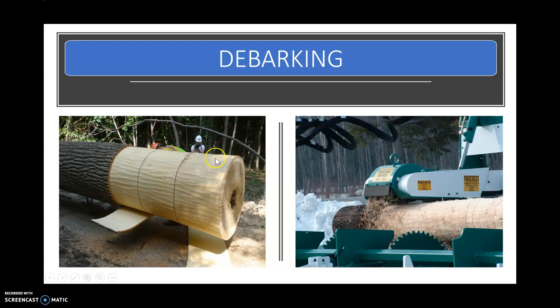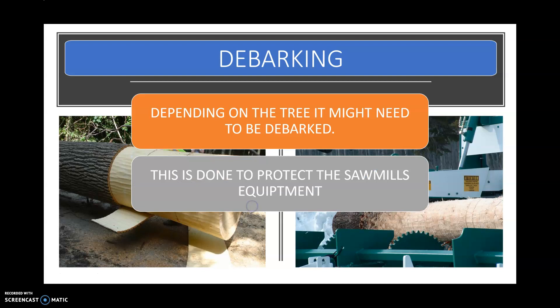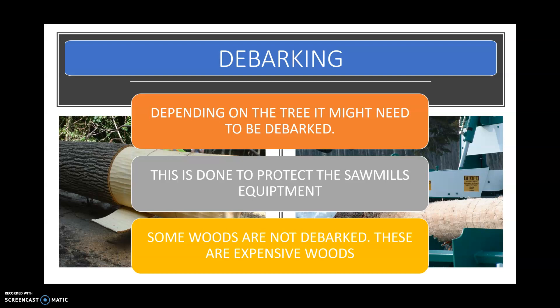Debarking. As you can see, we have a tree here that the bark has been taken off. There is another method of doing it as well. Depending on the tree, it might need to be debarked. This is done to protect the sawmill's equipment. Some woods are not debarked — these are expensive woods, or trees that are felled by smaller companies that don't convert trees into planks of wood all too often. That's why you might have the bark left on the tree.